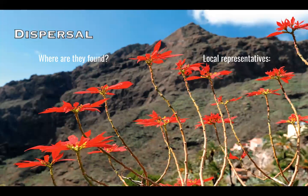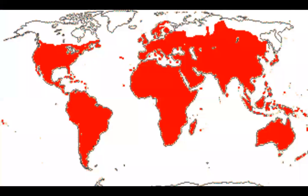Species of the Euphorbiaceae family are found all over the world except for Arctic regions. They thrive mainly in temperate or tropical regions. A large portion of species can be found in the Neotropics.